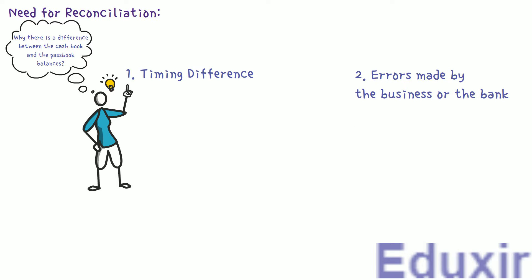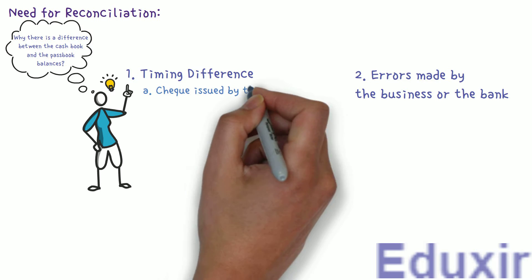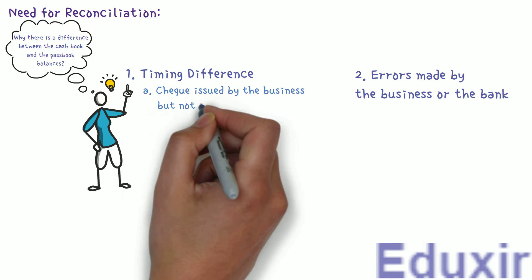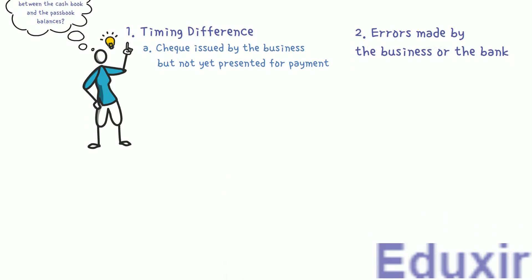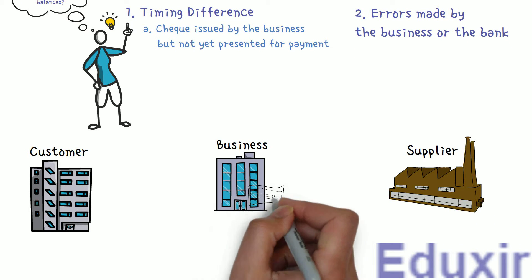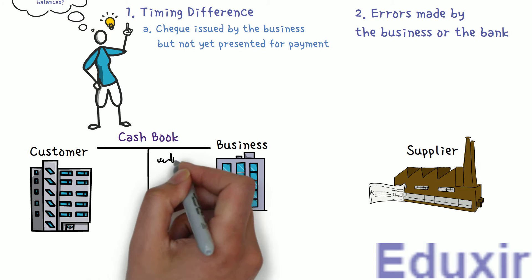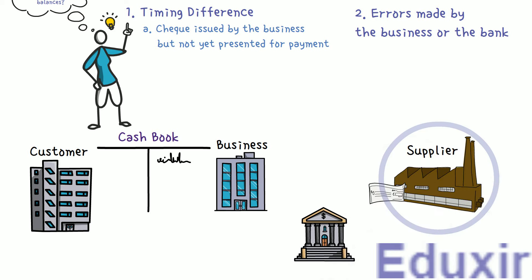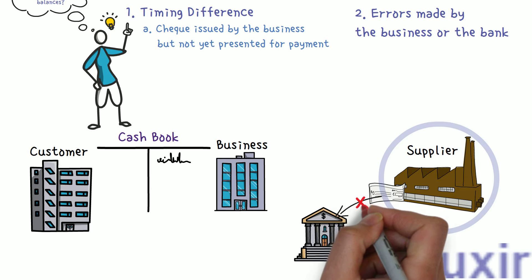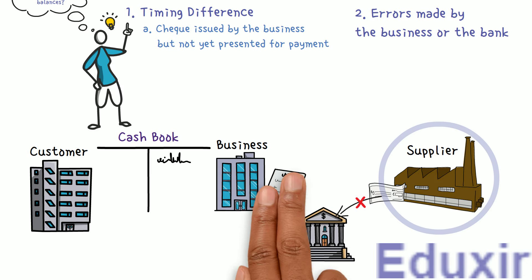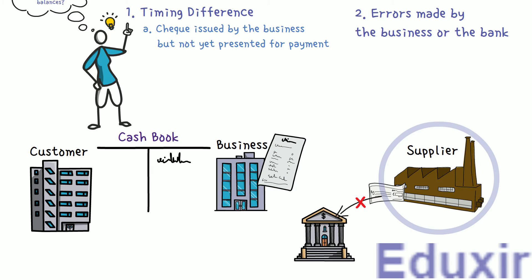One reason for timing difference is checks issued by the business but not yet presented for payment. When the business issues a check to the supplier or creditors, it is immediately entered on the credit side of the cashbook. The supplier or creditor has to encash this check by presenting it in the bank. In some cases, the creditor may not present this check immediately, so it will not appear in the bank statement.